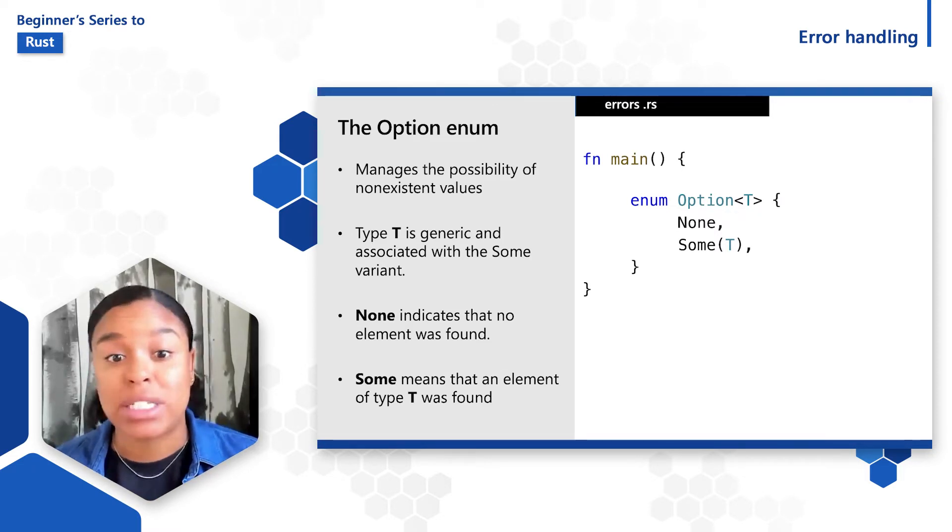If the value exists at a specified index, it's wrapped in the option some value where the value is type T. If the index is out of bounds, it will return an option none value instead.